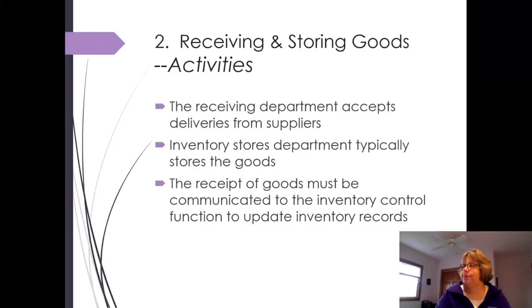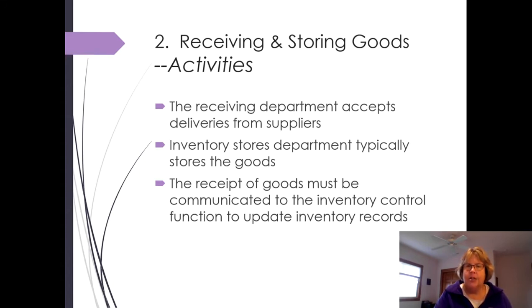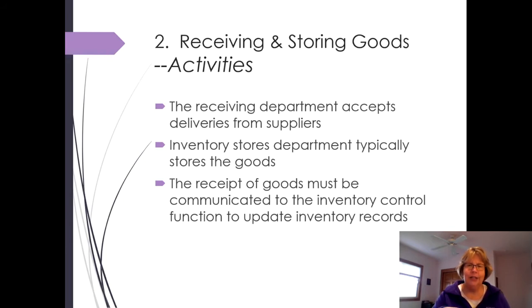Let's continue with the next section. In the revenue cycle goods are shipped, but in the expenditure cycle we're going to receive them. So usually this is a receiving department — in most companies this would be separate from shipping depending on volume. The receiving department accepts inventory or deliveries from the supplier, then goods are transferred to the inventory stores department. Once goods are received, a receipt of goods gets entered into the system and communicated to inventory control so somebody updates the inventory records.